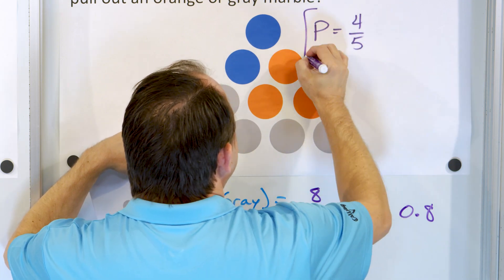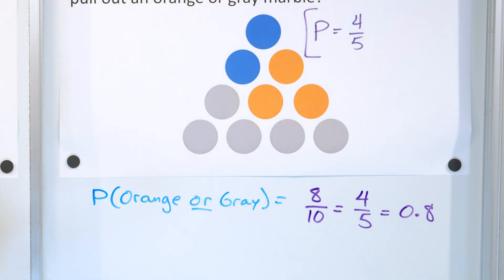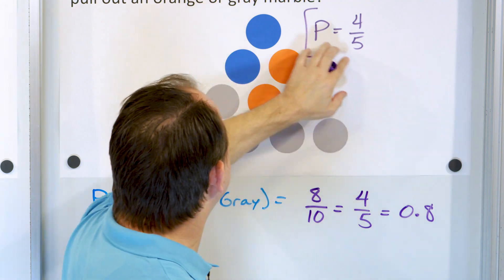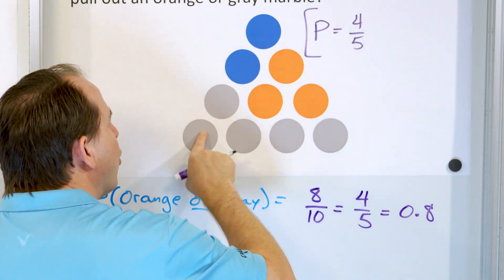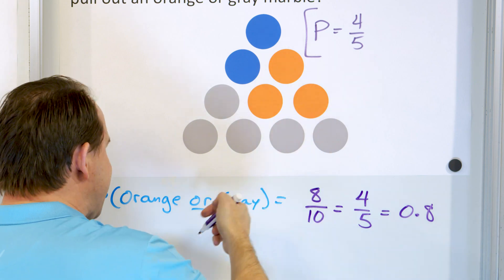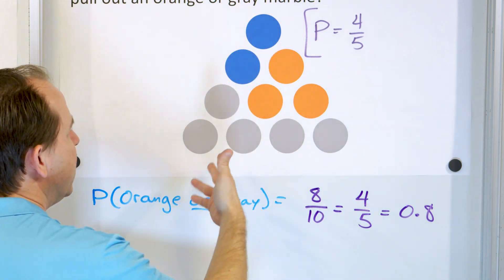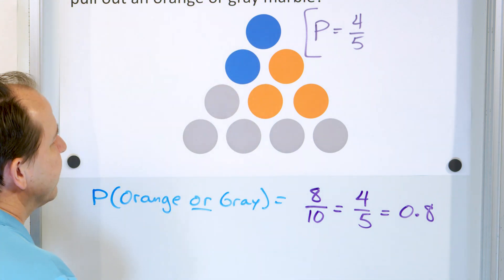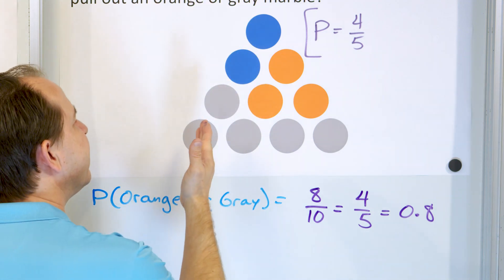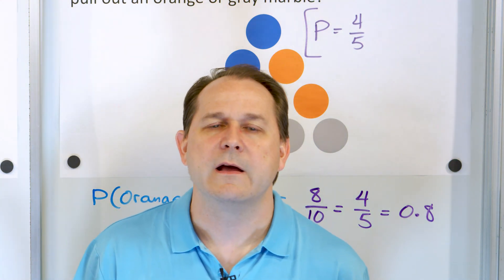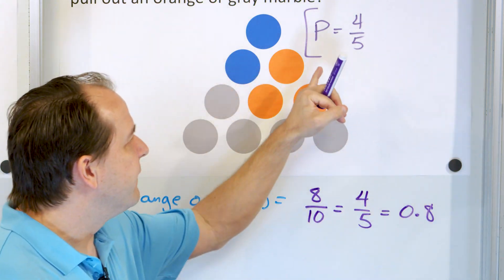It makes sense that 80% of the time you'd expect orange or gray, because almost all the marbles are orange or gray — eight out of ten. If I did this experiment once, I could pull a blue. But if I did it 500 or 5,000 or 200,000 times, I'd get closer and closer to the calculated 80% for getting orange or gray.